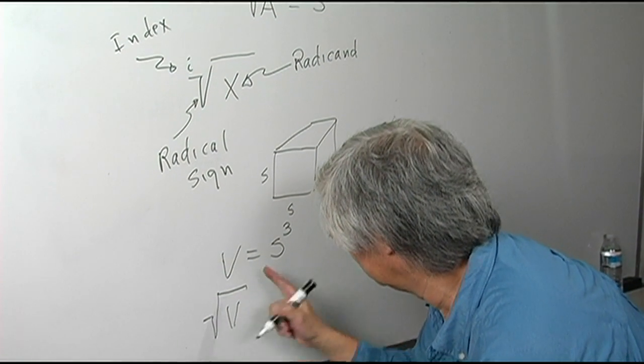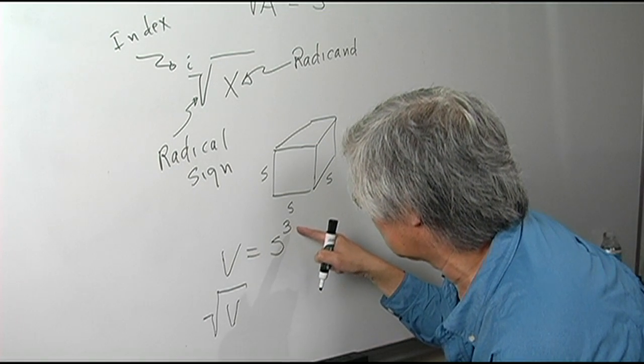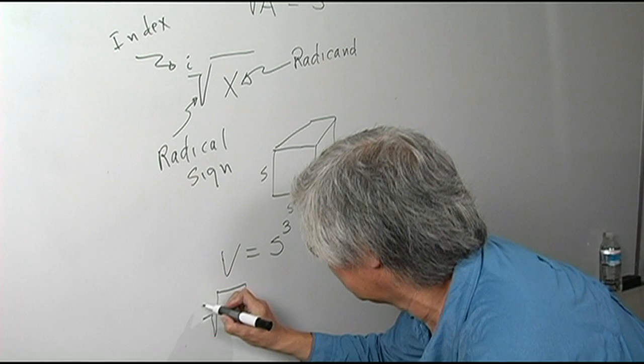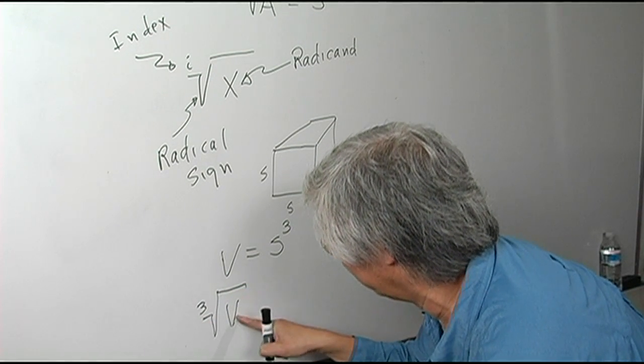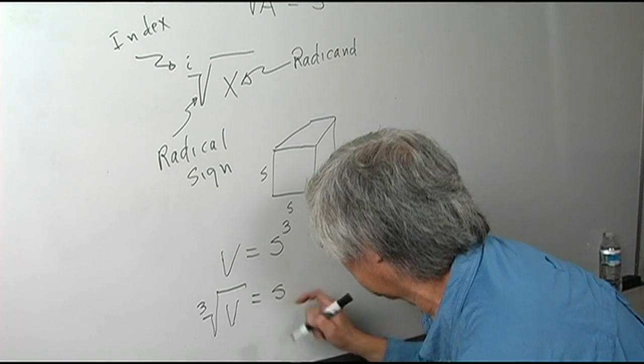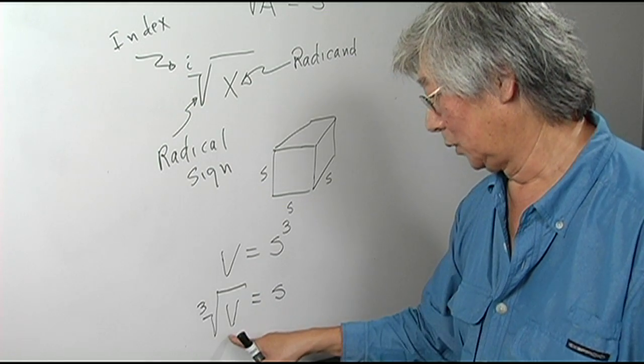Now, because the exponent here, this exponent becomes the index. You want to say the cube root of V is equal to S. And S is the cube root of V.